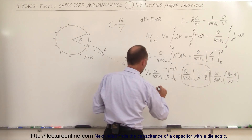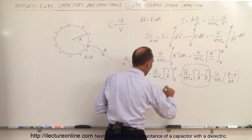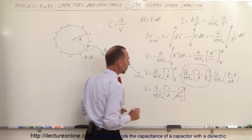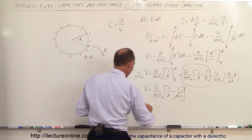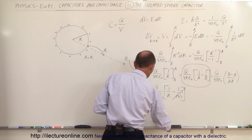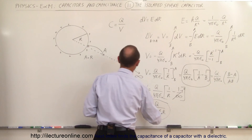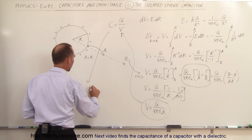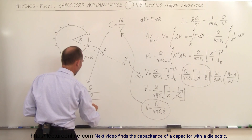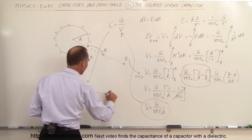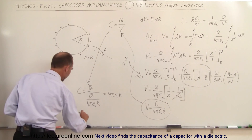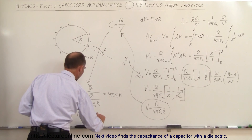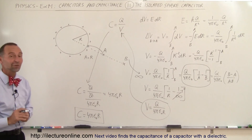With those limits, we have Q over 4πε₀ times (1/R minus 1/∞). Since 1/∞ equals zero, the potential on the surface of the capacitor V equals Q over 4πε₀R. Plugging this into C = Q/V, the Q's cancel and we get the capacitance of an isolated sphere: C equals 4πε₀ times R. That's the capacitance of an isolated sphere — that's how we do that.